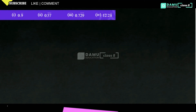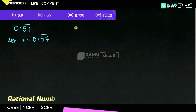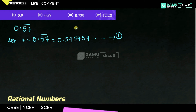Our second one is 0.57 bar. So, 0.57 bar — let x equal to 0.57 bar. That will be equal to 0.575757... repeating like that. Let's take this as equation 1. Periodicity — how many? Periodicity is 2. For that, 2 means you need to multiply on both sides with 100.